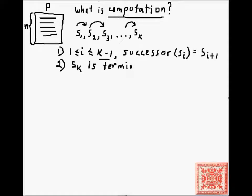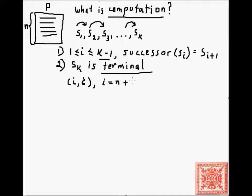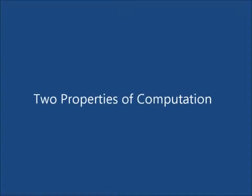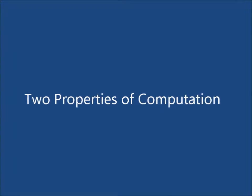A terminal snapshot is one whose next instruction to be executed is N plus 1 — the number following the last instruction of the program. So the program in the top left corner has N instructions, and for a snapshot to qualify as terminal, the instruction pointer must equal N plus 1, meaning there's nothing else to execute. Note that S1 doesn't have to be the initial snapshot; we can start execution from any legal snapshot.